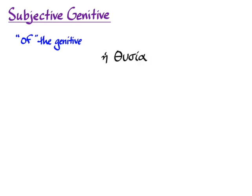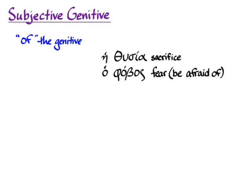Let's start with the subjective genitive. You'll be able to add this to your list of things that the genitive can do. Translating 'of' plus the noun in the genitive will usually serve you just fine as a translation of the subjective genitive. It comes when we have a noun not in the genitive that has within it some implied verb. So if you have the noun thusia, that implies sacrifice — somebody sacrifices something. Or perhaps the noun phobos, fear, which implies the verb 'fear' or 'be afraid of.' That means there's in those nouns an idea of something that could be doing whatever the action is.